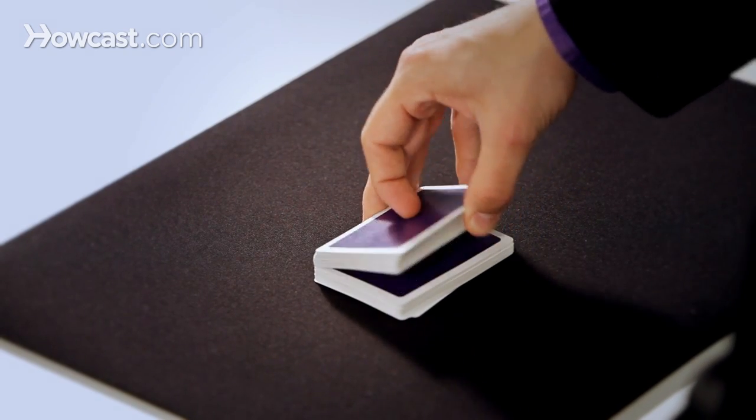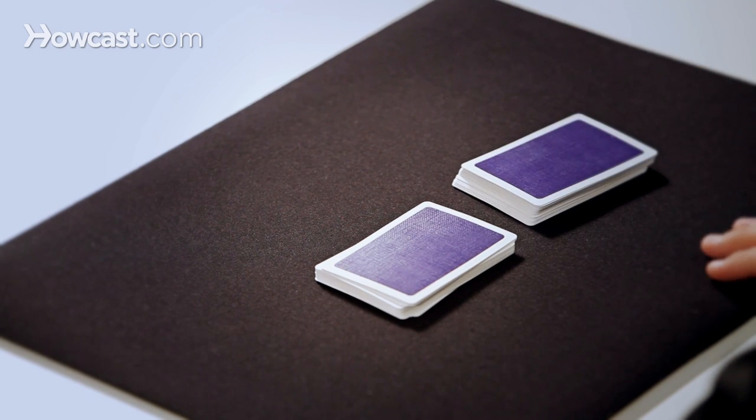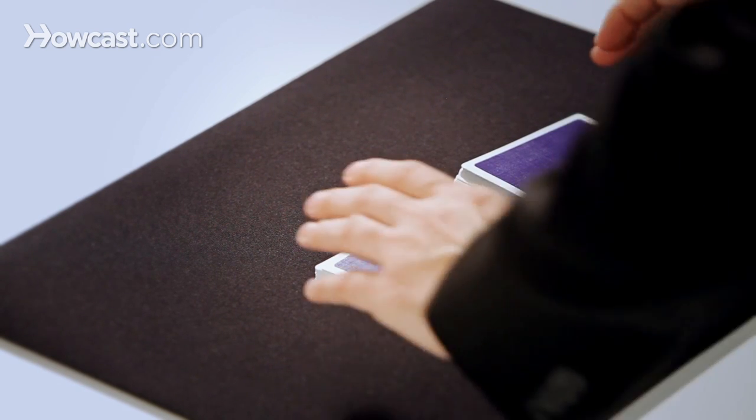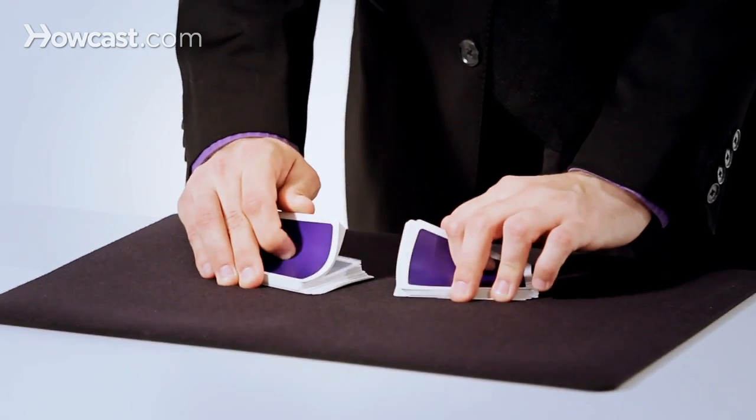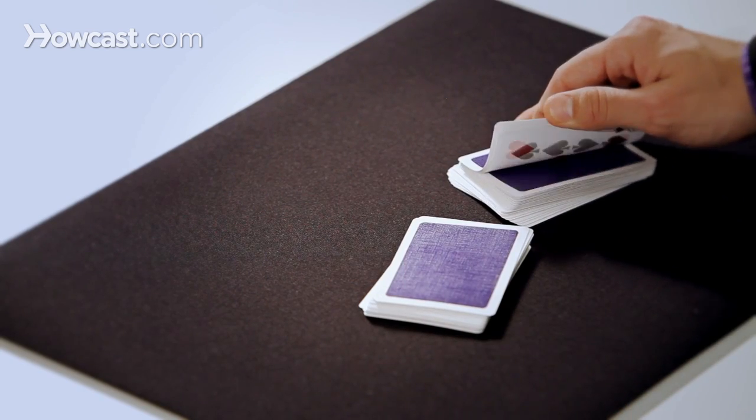First, you cut off half of the cards, and you place them to the side of the other packet, and your thumbs go to the back. So your fingers are on front, your index fingers are curled on top, and your thumbs are going to do this action.